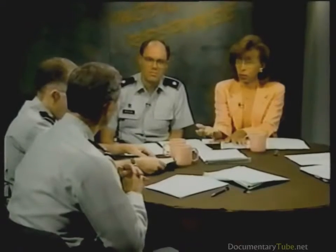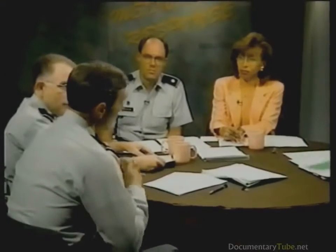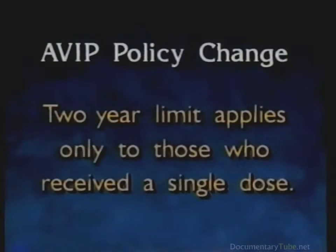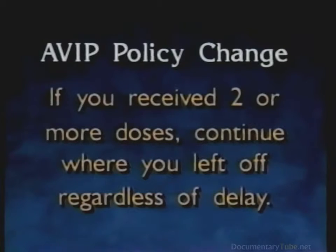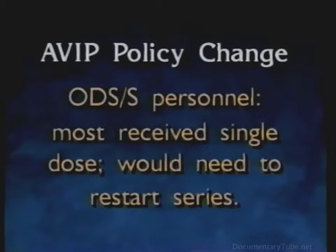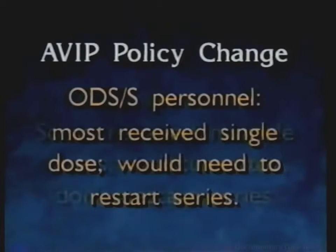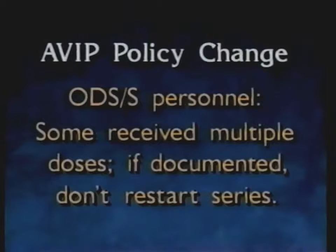If you miss a dose and are within two years, you simply continue right where you left off. Under the new AVIP guidelines, the two-year limit applies only to personnel receiving a single dose; those who received two or more doses can pick up right where they left off regardless of the delay. Personnel from Desert Storm who received only a single dose and it's been more than two years would need to start over.